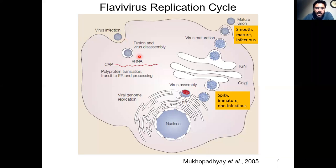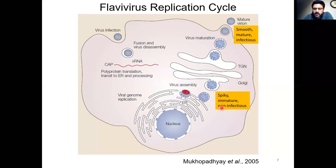Shown here is a very simplified version of a typical flavivirus replication cycle. Flavivirus particles enter host cells by receptor-mediated endocytosis. Once inside the cells, the acidification of the endosome lumen triggers a series of conformational changes in the virus that release the viral RNA genome into the cytosol. Then the assembly of progeny particles is initiated in the endoplasmic reticulum, where the particles first assemble as spiky immature non-infectious particles.